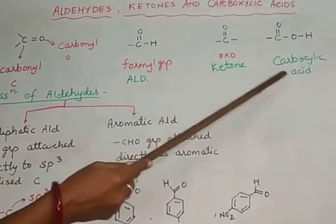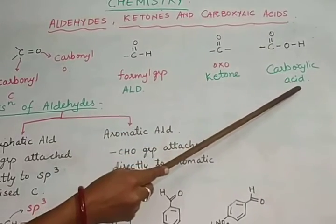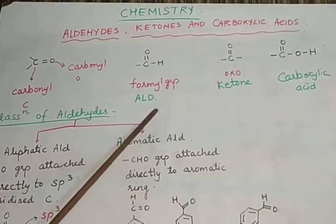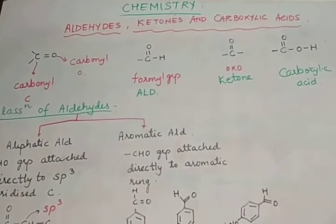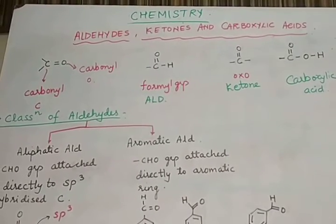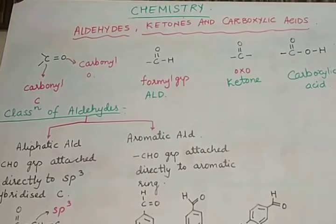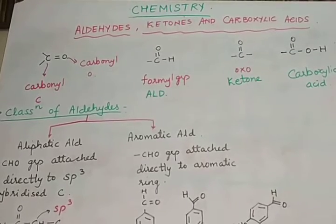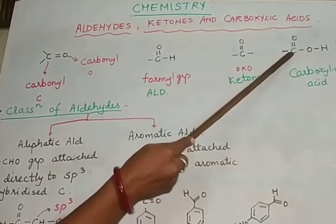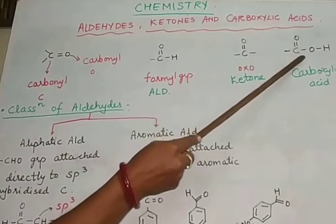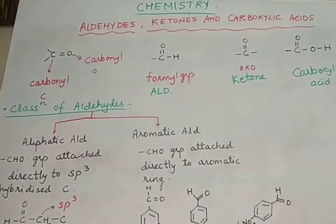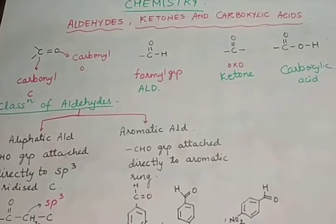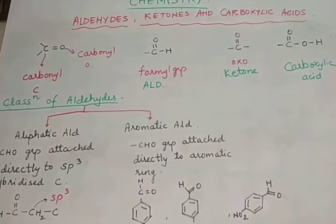The third compound containing the carbonyl group is a carboxylic acid. It contains C=O along with an OH group — the functional group is COOH. Aldehydes and ketones show mostly the same preparation methods and chemical properties, but carboxylic acid shows different properties due to the presence of this OH group attached to the carbonyl carbon.